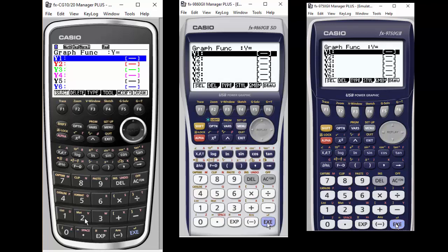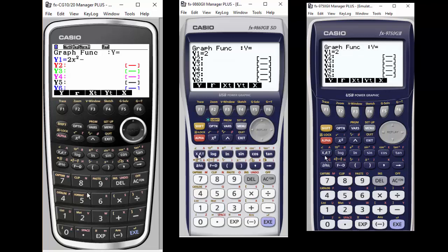Bigger calculator, more memory with the Prism, color with the Prism, but the functionality, we're going to do an example here to show you that the functionality of the three of them is very similar.